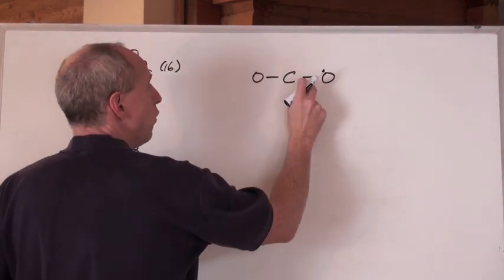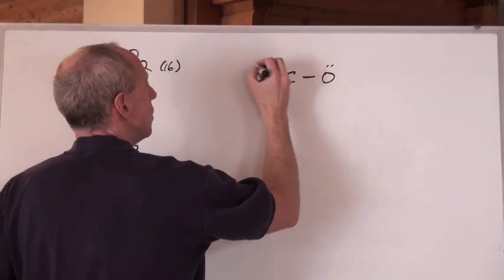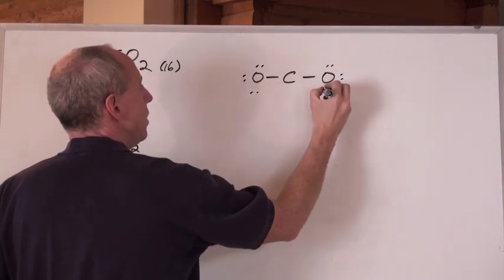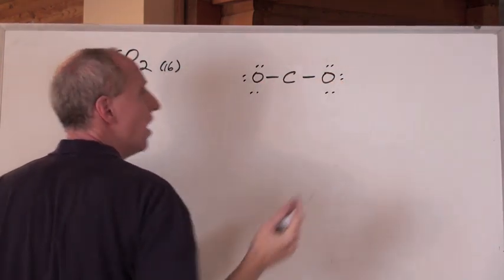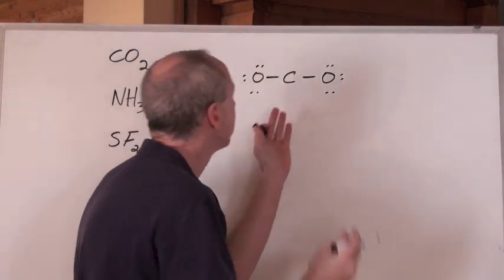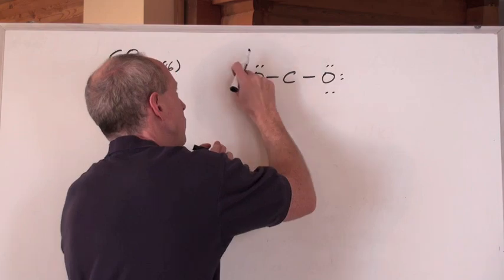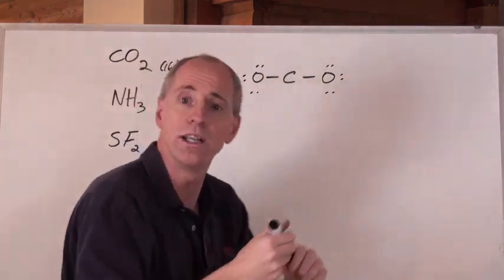Now, so that's 2, 4. Then I go like this. 6, 8, 10, 12, 14, 16. Whoa, done. But the carbon doesn't have its octet. The oxygens do: 2, 4, 6, 8, 2, 4, 6, 8. But the carbons don't. What do you do?